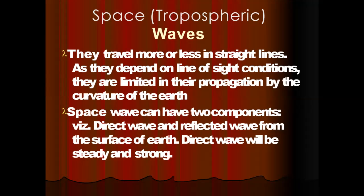The next mode is space wave propagation or tropospheric wave propagation. These waves travel more or less in straight lines as they depend on line-of-sight (LOS) conditions. LOS means there is no obstruction between transmitter and receiver on Earth. The signal is transmitted directly from transmitter to receiver — that is called line of sight. They are limited in their propagation by the curvature of the Earth.